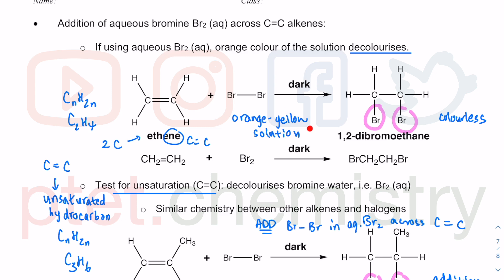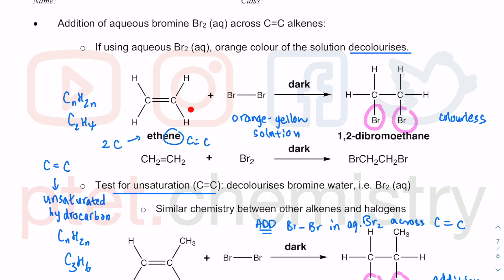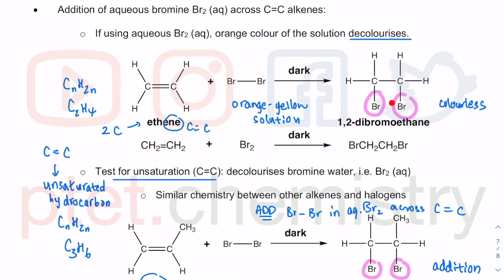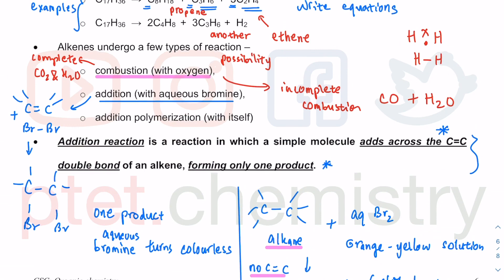The aqueous bromine, which is slightly lighter in color than liquid bromine, starts as an orange-yellow solution and decolorizes — meaning it turns colorless — as you add the Br2 onto the carbon-carbon double bond. That is the chemistry of unsaturated hydrocarbons. You only get one product despite two things reacting, because they have added together across the carbon-carbon double bond. The last type of reaction is called addition polymerization.